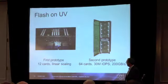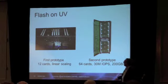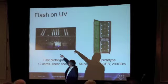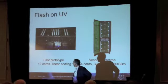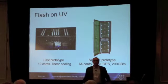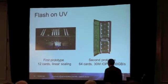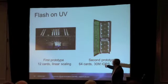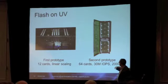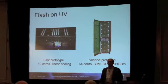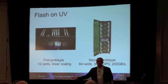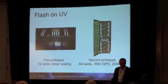Another similar example: put Flash on the same UV system. Somebody came up with the idea of using the new Intel NVMe cards — we borrowed 12 cards, put them in the box, and saw great scaling. Then we went to talk to Intel about getting 64 cards. We put 64 cards in a matter of weeks, and started seeing huge numbers of IO: 30 million IOPS, 200 gigabytes per second, just by putting the cards there. That became a project and will be part of the product.